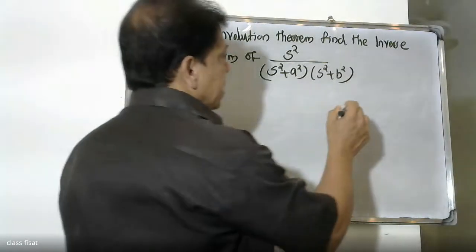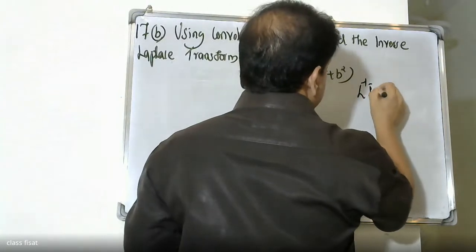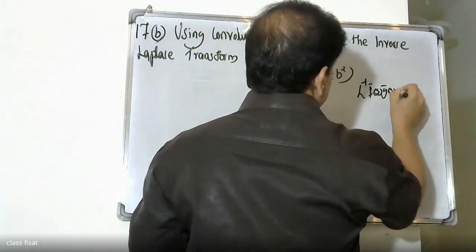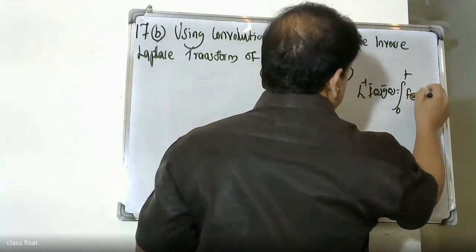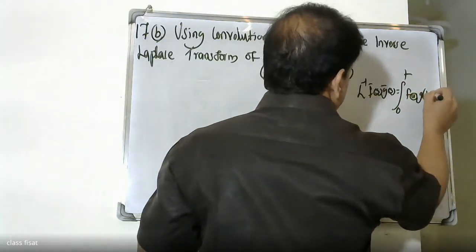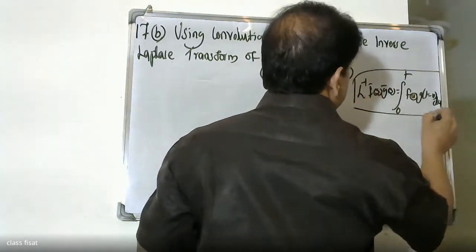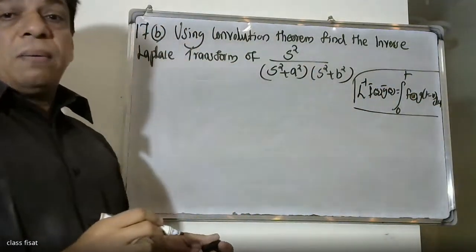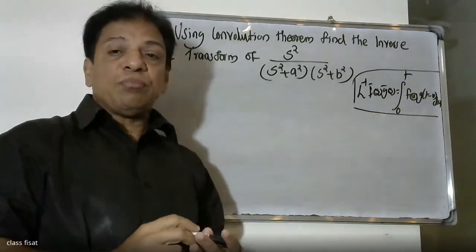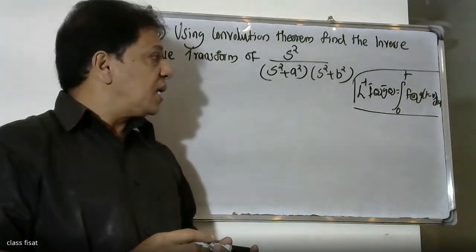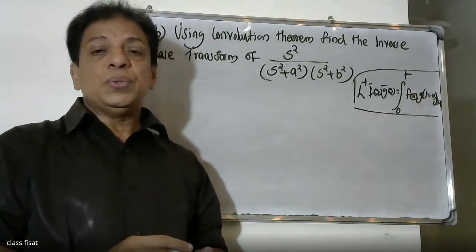The convolution theorem states that the inverse Laplace of F̄(s)·Ḡ(s) is equal to the integral from 0 to t of f(u)·g(t minus u) du. This is the formula we will use by applying the convolution property.